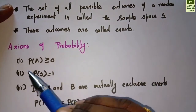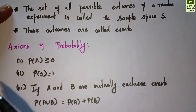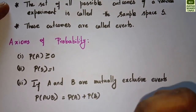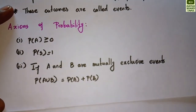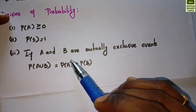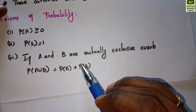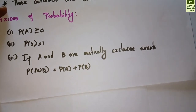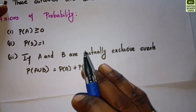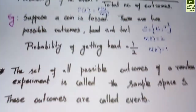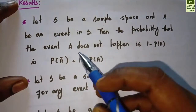Next are the axioms of probability. Axiom 1: P(A) ≥ 0 — probability of any event is greater than or equal to zero, it is never negative. Axiom 2: P(S) = 1 — the probability of the sample space is equal to 1. Axiom 3: If events are mutually exclusive, then P(A ∪ B) = P(A) + P(B).